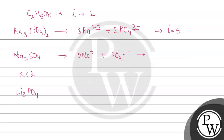KCl dissociates to give K+ and Cl−, so i equals two. Li3PO4 gives three Li+ plus PO4^3−, giving four ions so i equals four. All of these van't Hoff factor values — five, three, two, and four — are greater than C2H5OH's value of one.